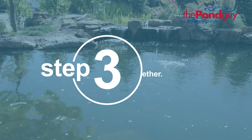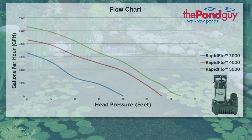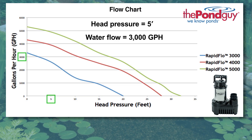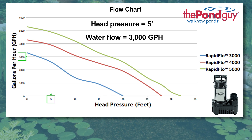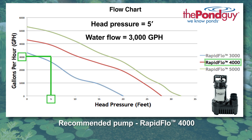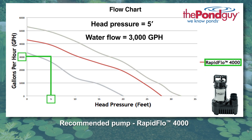Step 3: putting it all together. Now that we have our head pressure of five feet and our desired water flow of 3,000 gallons per hour, all we have to do is select a pump that can pump at least 3,000 gallons per hour at a head pressure of five feet. This can easily be done by reviewing the pump flow charts.